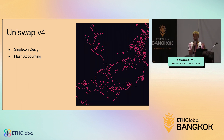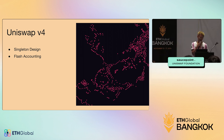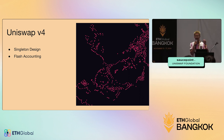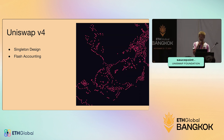The idea with flash accounting is you can stack a bunch of operations that create credits or debits, and at the very end of the transaction you do the final token settlement. Whereas normally if you were to swap and then add liquidity, you'd have to do token transfers for each. With flash accounting, that all just happens at the very end.